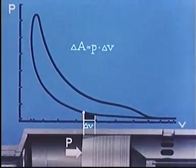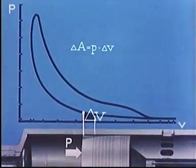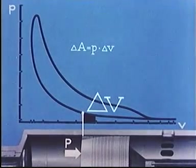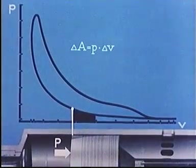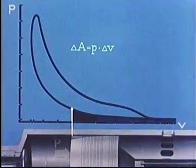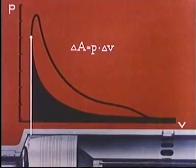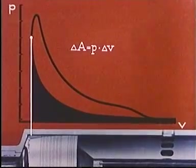This work is represented by the area below the part of the compression line corresponding to delta V, and the same applies to every single part of the compression curve. That is to say, that the whole area below the compression line represents all the work that the piston must perform to compress the air in the cylinder.